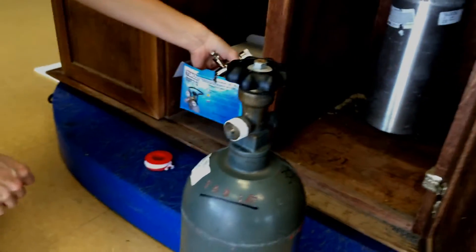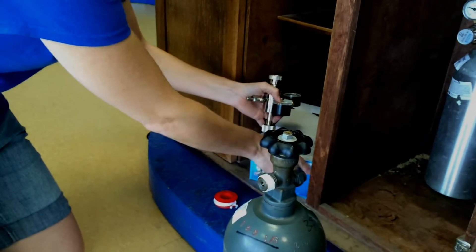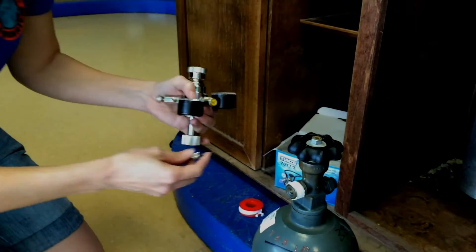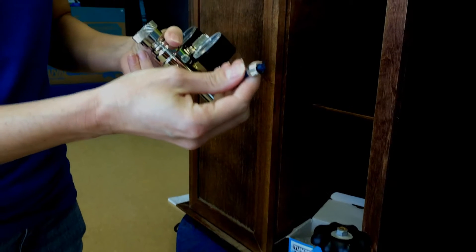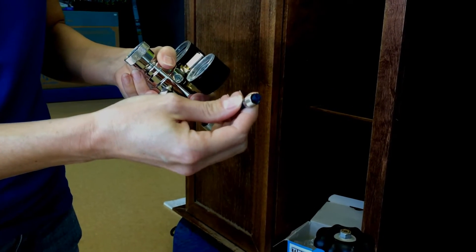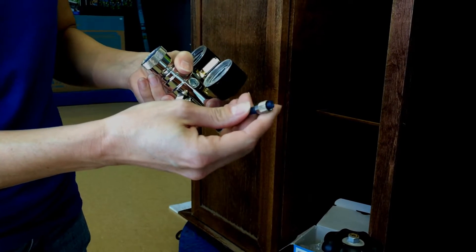Next, we're going to hop over to our regulator. We do recommend the Tunze brand. We've had a lot of success with these at the store. What you're going to do is take your airline tubing. This is the tubing that will go into your aquarium with the diffuser attached.